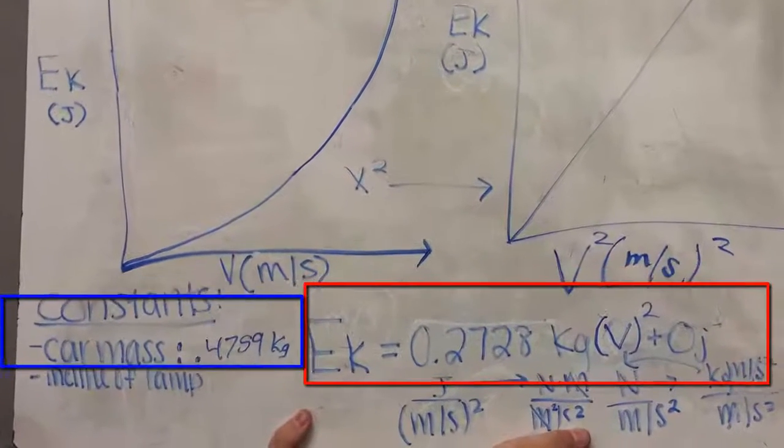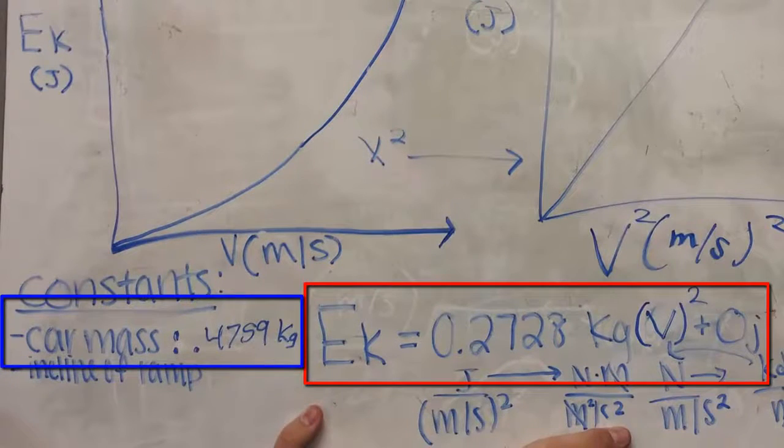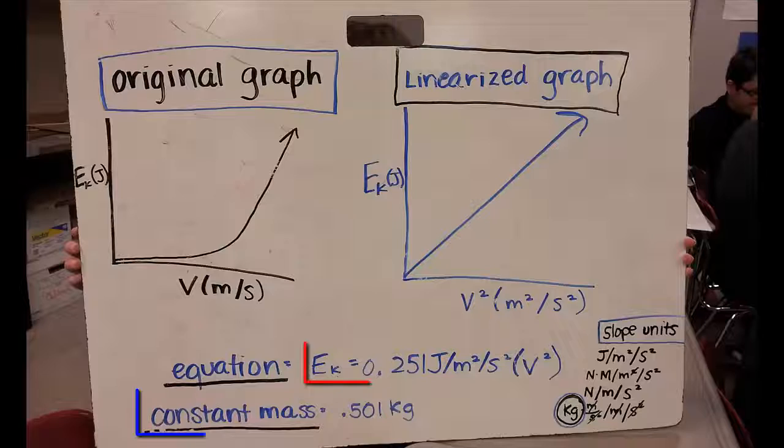Let's look at another group's data. Their equation is written in red, and you can see the slope is 0.2728 kilograms, and their mass was 0.4759 kilograms. So about a half of a kilogram in the slope was about a half of that, or 0.25 kilograms. So the slope is one half the mass.